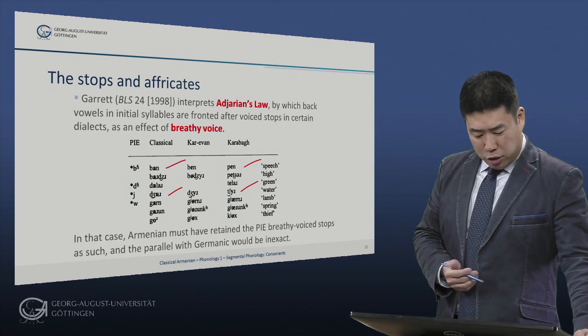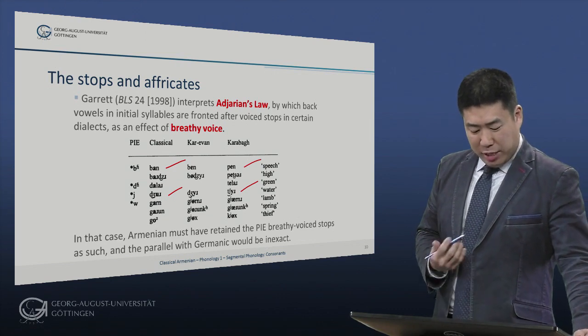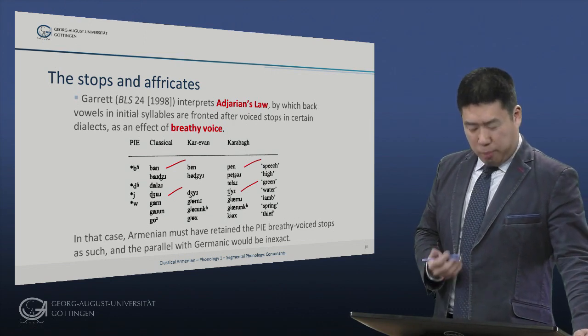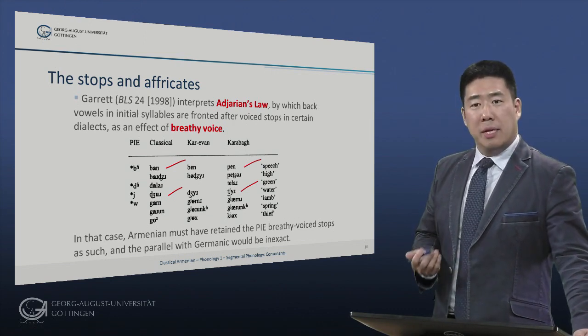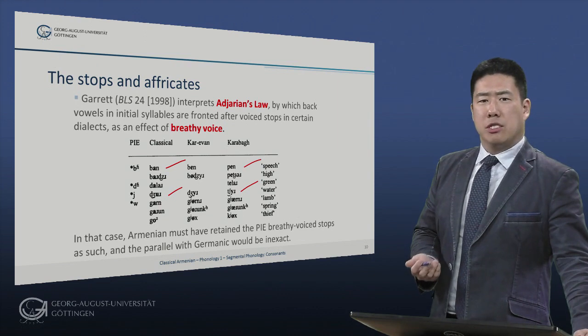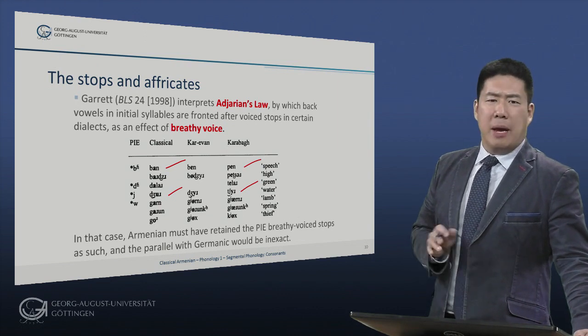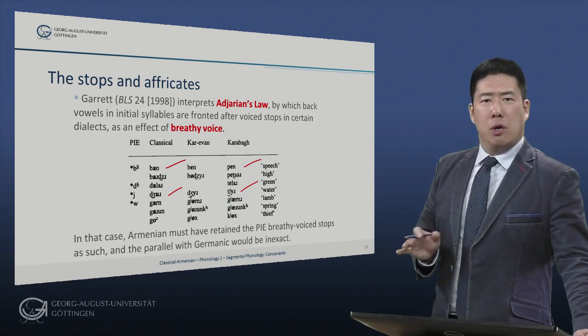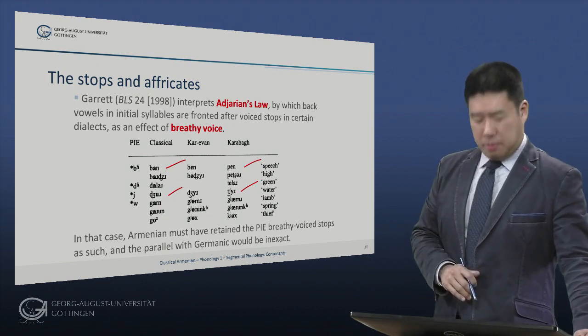In that case, Armenian would have retained the Proto-Indo-European phonetic value of these stops as such, and the parallel with Germanic would not be so precise.